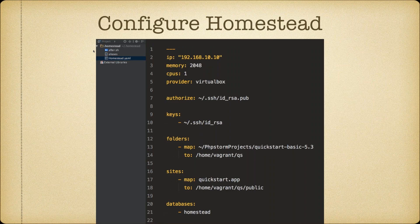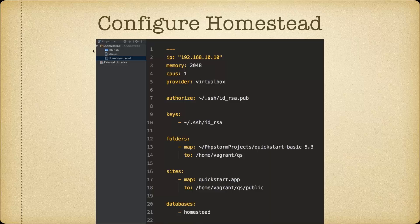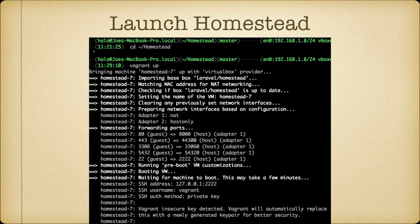Next, you map your sites to folders so Homestead will automatically create an Nginx site for each project. In this example, we map the QuickStart Basic 5.3 folder to /home/vagrant/QS, and map the imaginary domain quickstart.app to /home/vagrant/QS/public — the public folder of our site root. You can also add databases here. By default, Homestead comes with a database called 'homestead'. If you add multiple projects, you can add multiple databases as well.